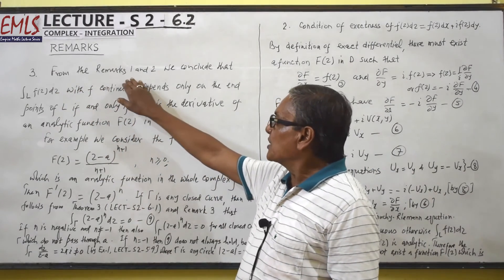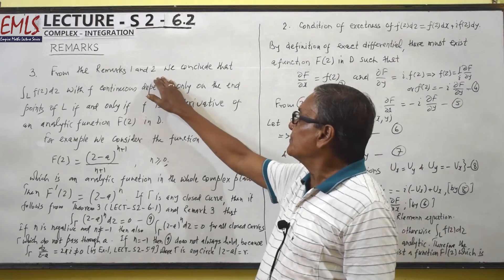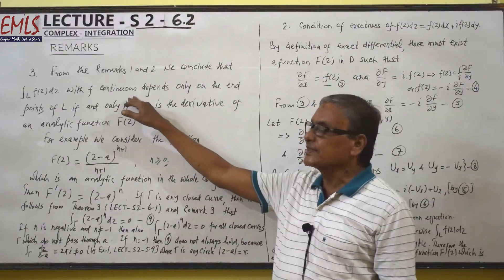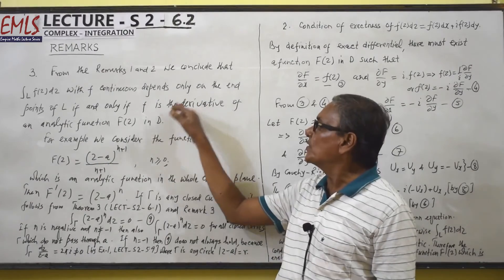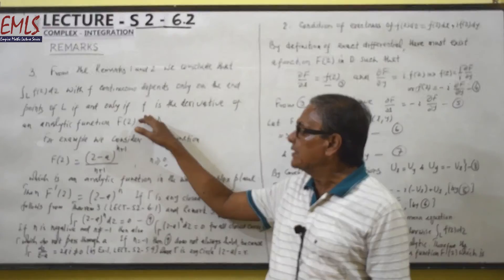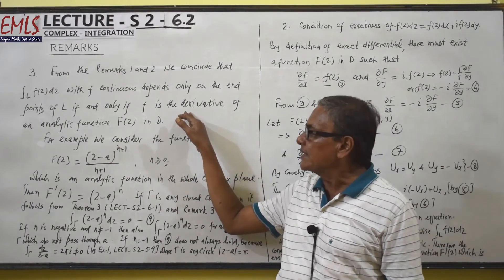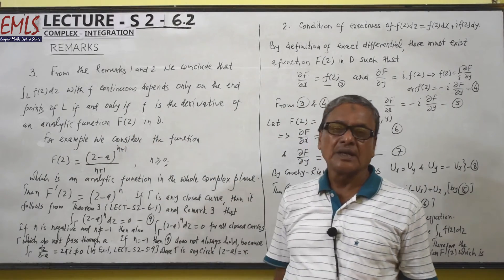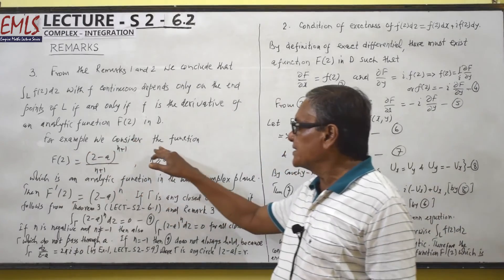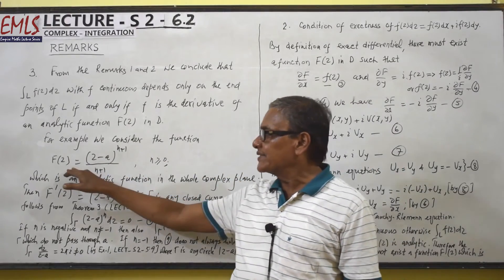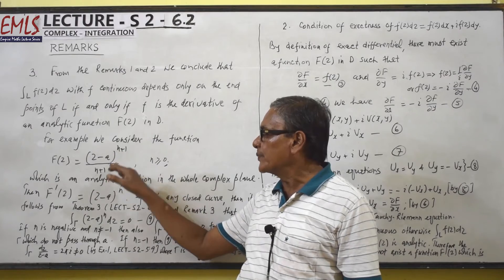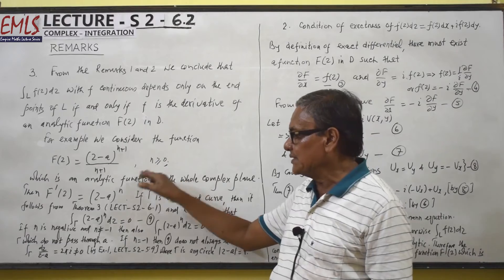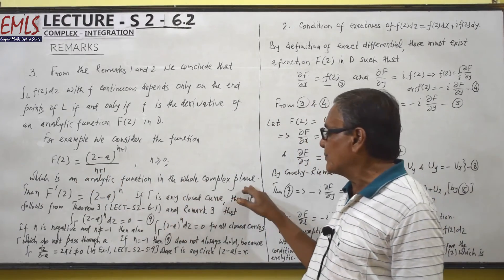Remark number 3. From remarks 1 and 2, we conclude that the integral over L of f(z)dz, with f continuous, depends only on the end points of L if and only if f is the derivative of an analytic function capital F(z) in D. For example, consider the function capital F(z) equals (z minus a)^(n+1) divided by (n+1), where n is greater than or equal to 0, which is an analytic function in the whole complex plane.